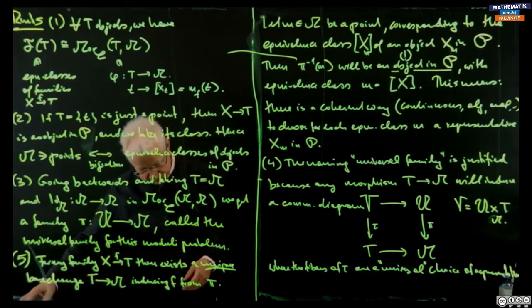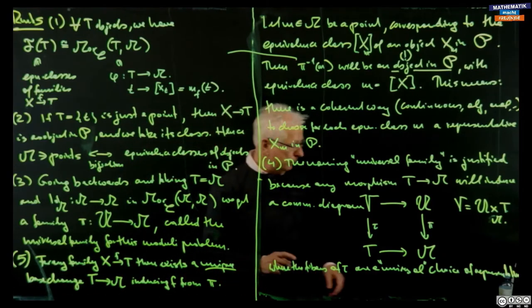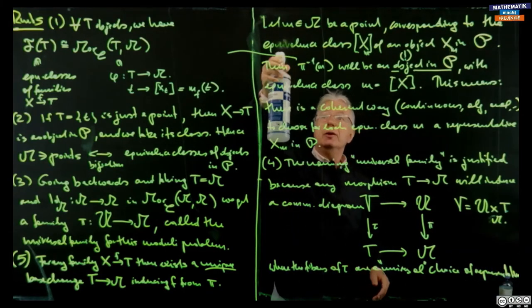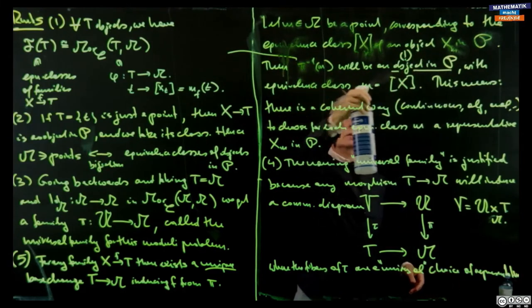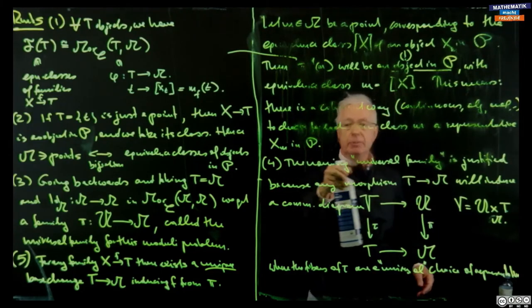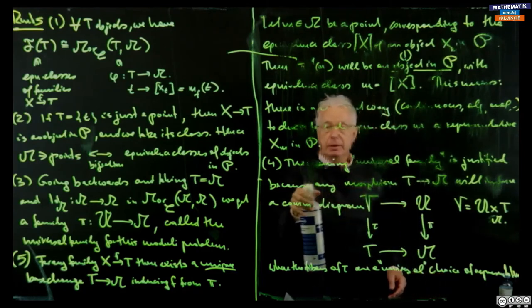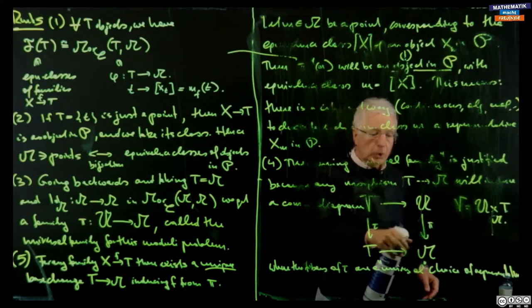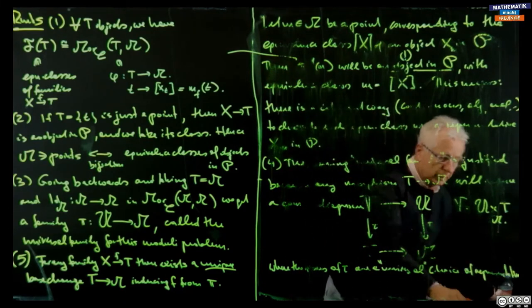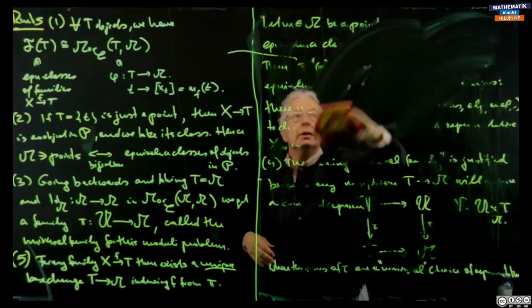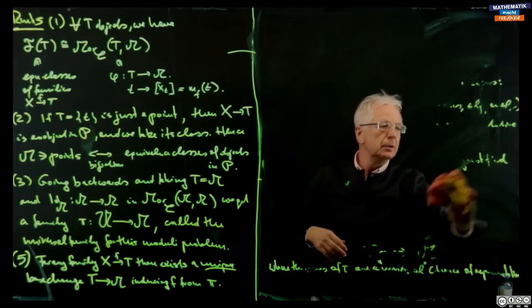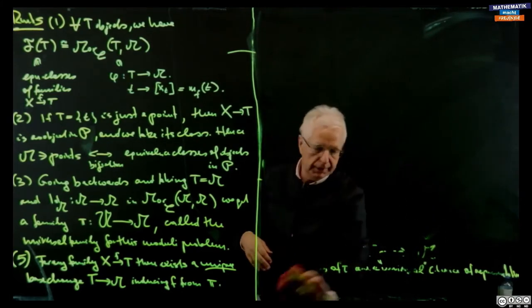Yes — I use the property of the category having a terminal element because I want to talk about the fiber over a point. I need the concept of point, which is defined by the functor of points using the terminal or initial object. If you have a topological space X, the point of X can be characterized as a map from the one-point space into X — this map is uniquely given by choosing a point in X. That is what is often called the functor of points in algebraic geometry.